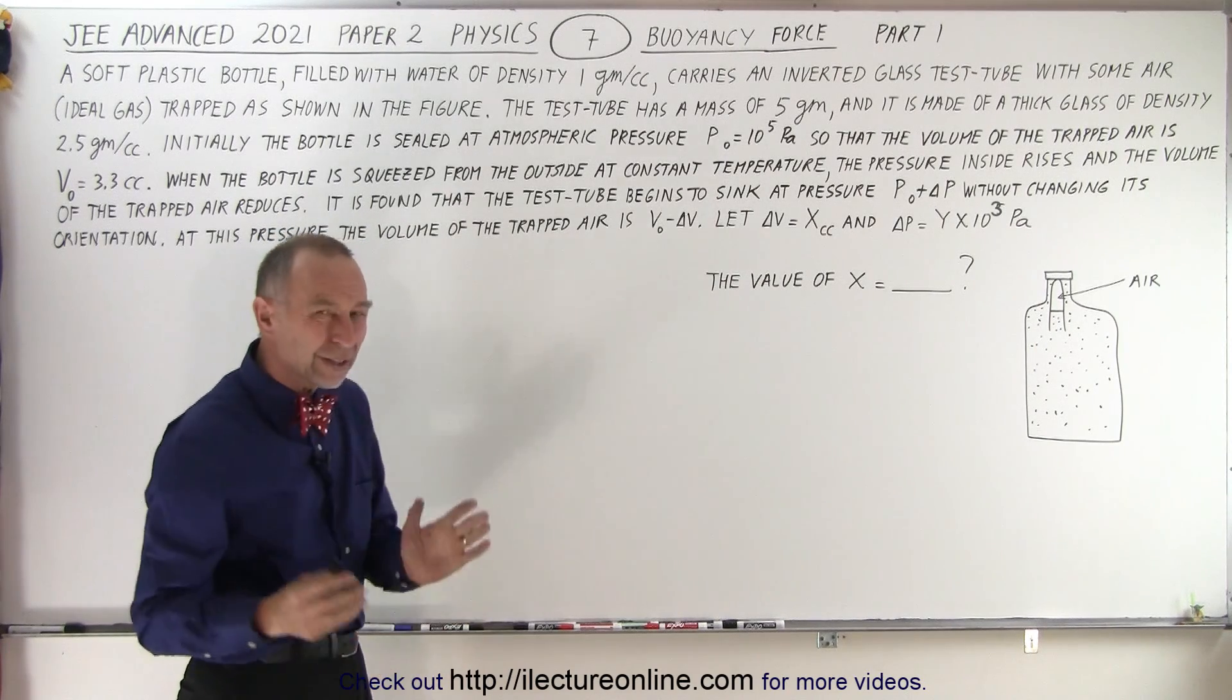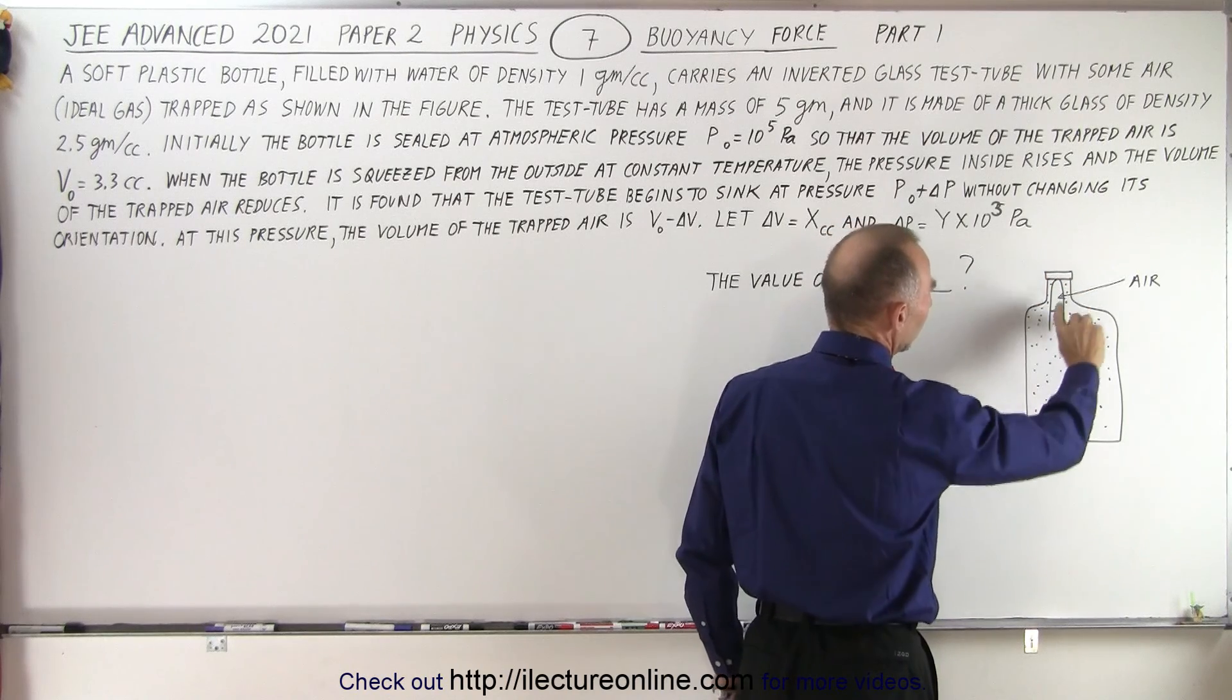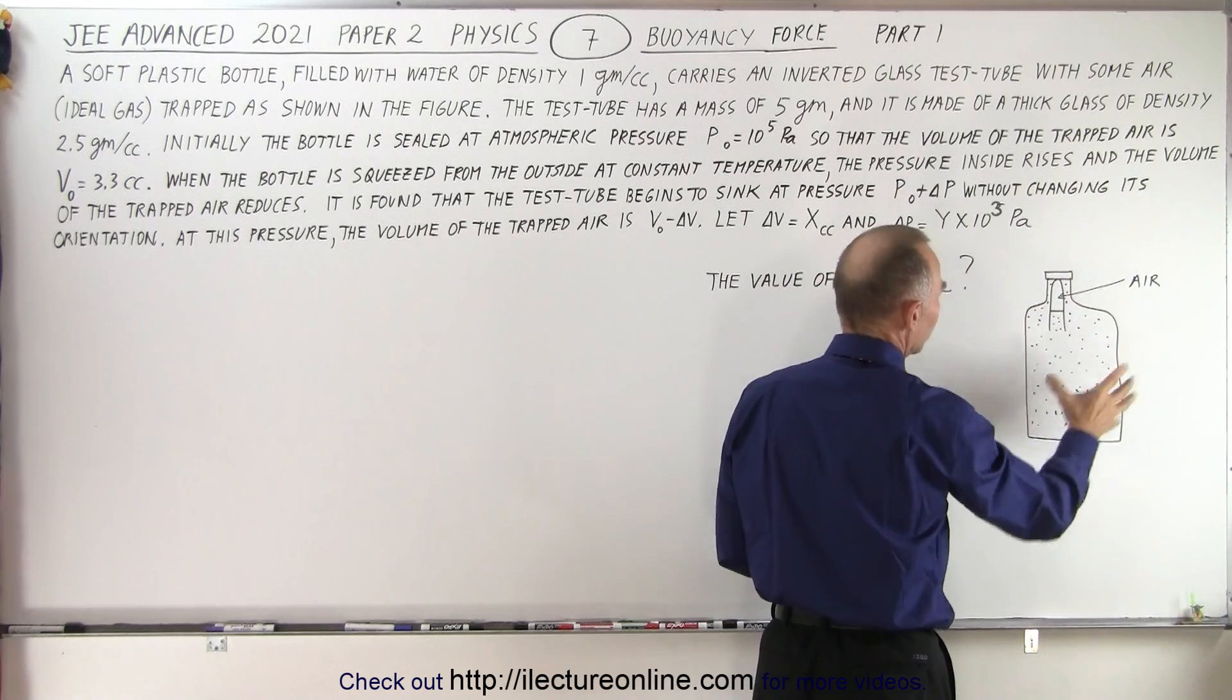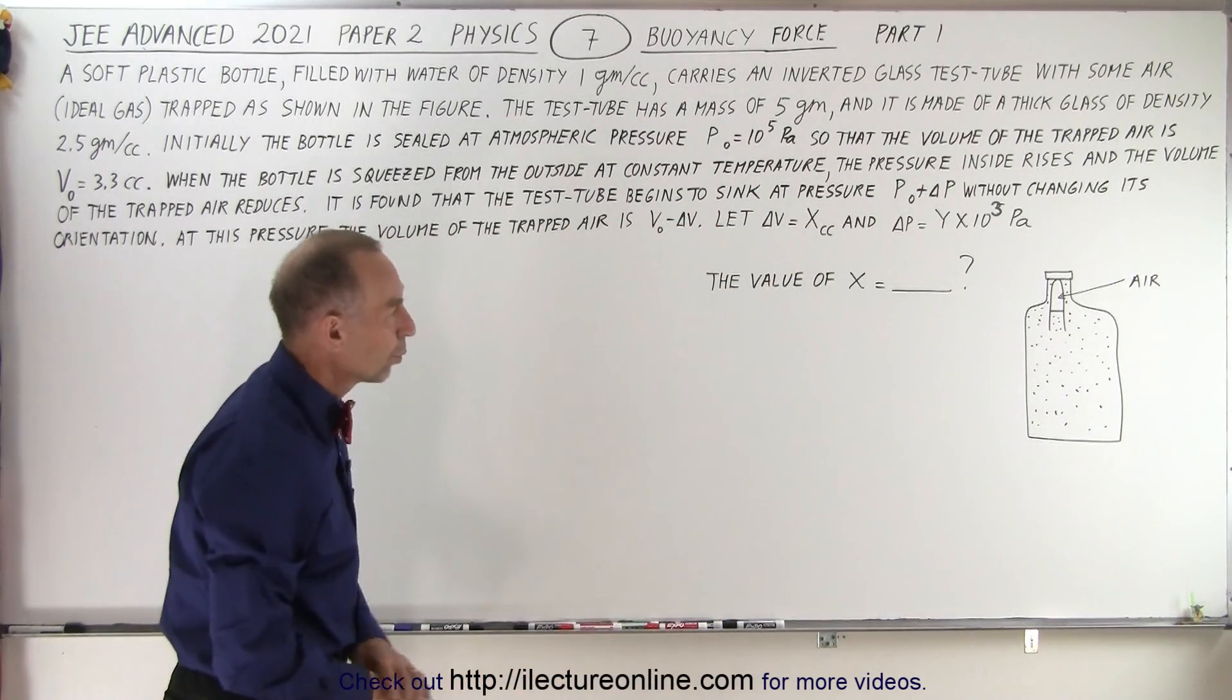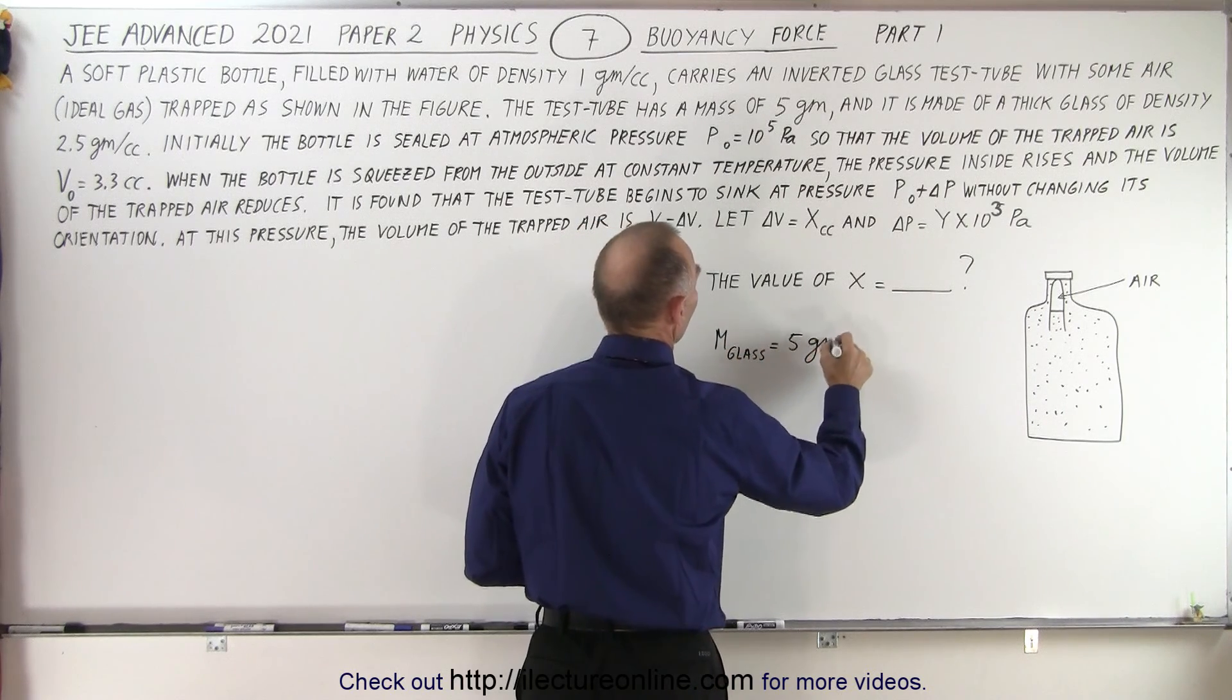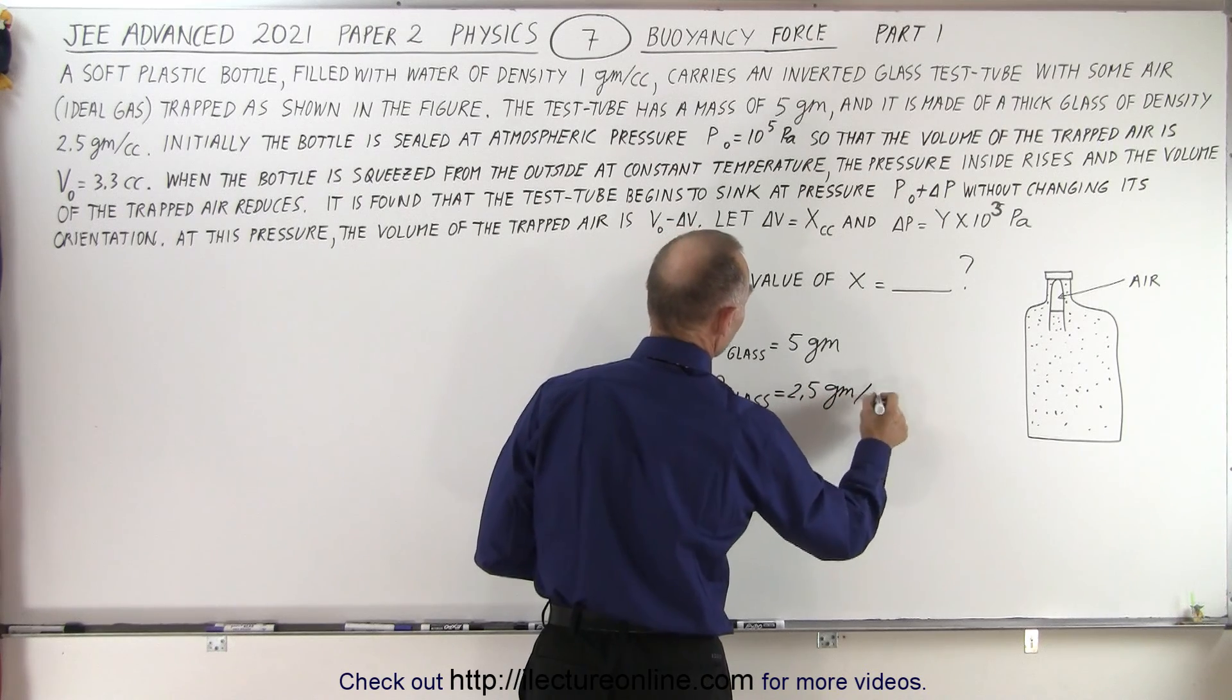So here we are dealing with the principle of the buoyancy force and notice that initially this object is buoyed up. Well notice that there's some water in the test tube, there's some remaining air up here, and the pressure of the air of course must be equal to the pressure of the outside and it is equal to 10 to the fifth Pascals. We know that the mass of the glass is equal to five grams and we know that the density of the glass is equal to 2.5 grams per cubic centimeter.